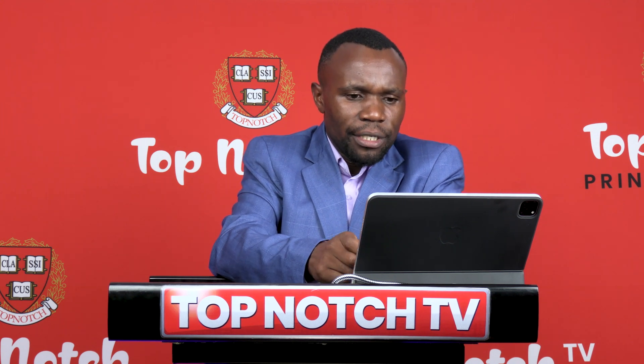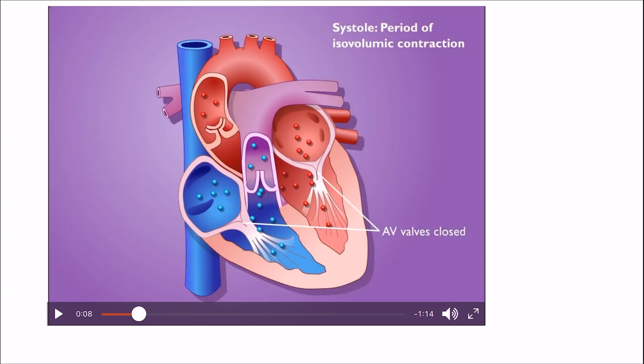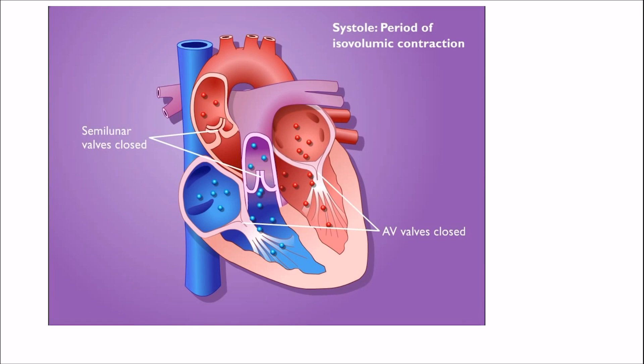There is a difference between the two ventricles in the valves and therefore the direction of blood flow. We have the semilunar valves and the atrioventricular valves. The atrioventricular valves include the tricuspid valve on the right, between the right atrium and the right ventricle, and the bicuspid valve between the left atrium and the left ventricle.